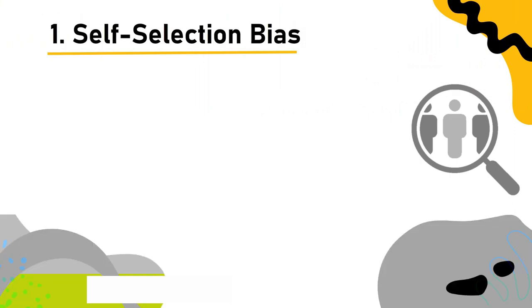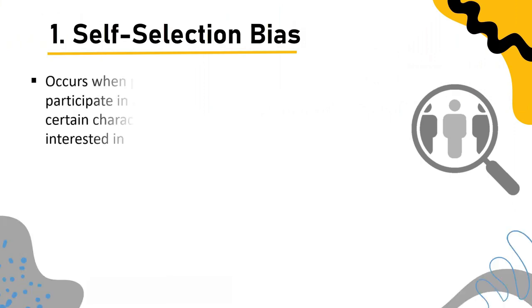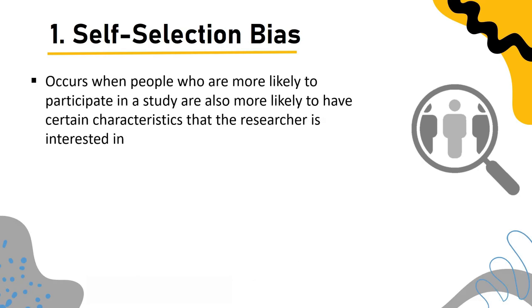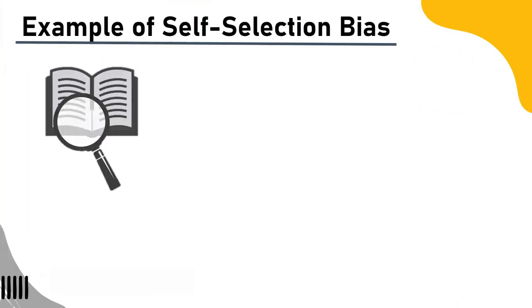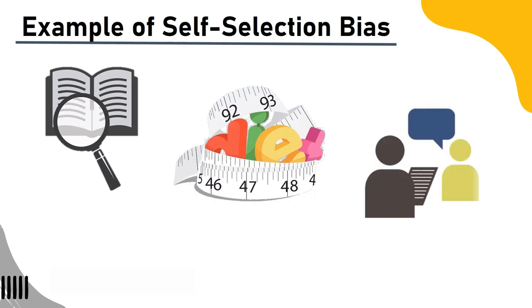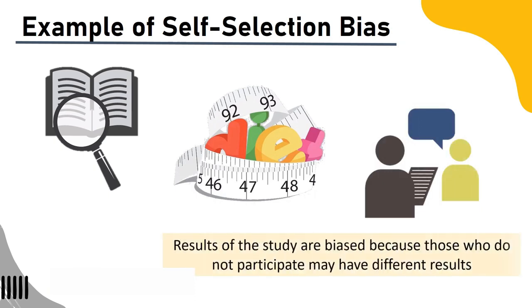Self-selection bias: One common cause is self-selection bias, which occurs when people who are more likely to participate in a study are also more likely to have certain characteristics the researcher is interested in. Participants choose to participate based on their own personal characteristics. Example: If a study looks at the effects of a new weight-loss drug, those more likely to participate are already interested in losing weight, biasing the results because non-participants may have different outcomes.